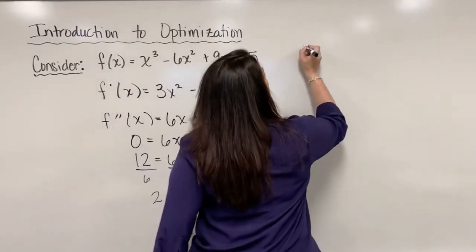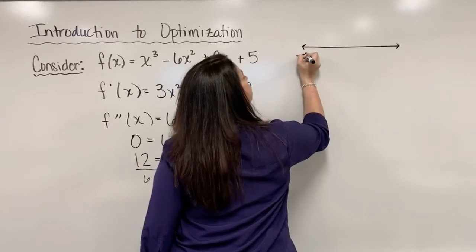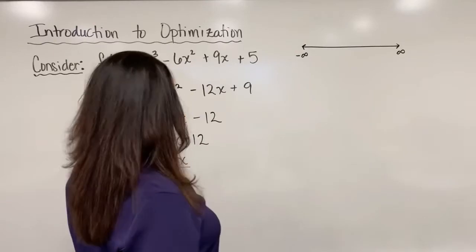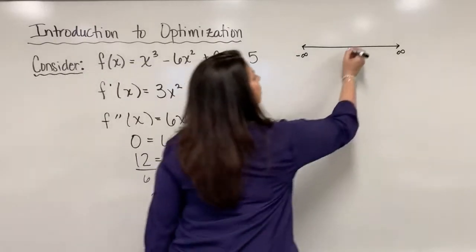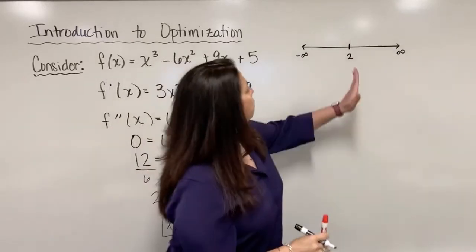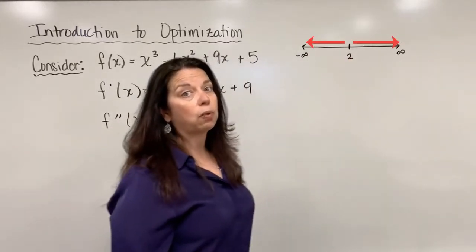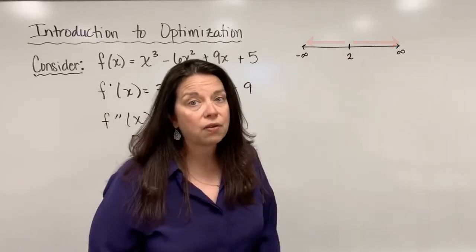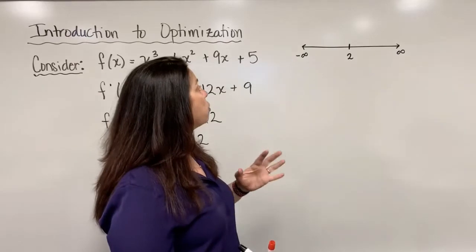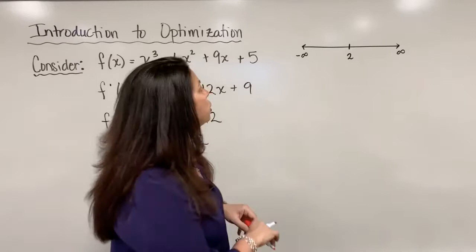We will go to the sign chart here, just like with the first derivative test. We will create our number line negative infinity to positive infinity and put our 2 right here on this number line. We need to pick a value to the left of 2 and another value to the right of 2 to test those values. We want to know is that second derivative positive or negative in those regions.